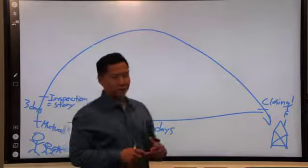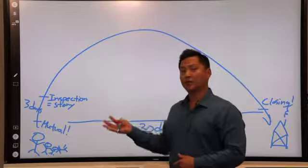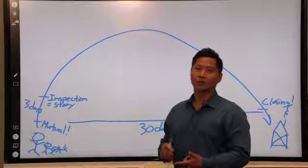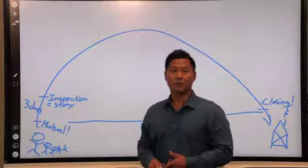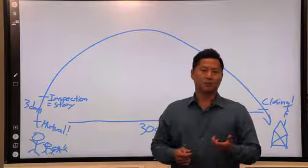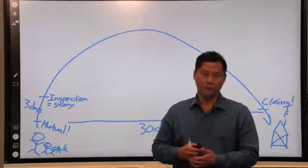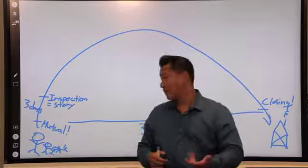A lot of buyers can get into trouble by nickel and diming the seller, which means if you're going in and asking for little things like doorknobs to be fixed, light bulbs to be replaced, little tiny leaks in the plumbing to be fixed. And of course, you can ask for all those things to be fixed, but once you start nickel and diming somebody, it psychologically weighs on them.